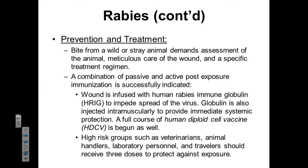A combination of both passive and active exposure immunization is successfully indicated to treat individuals exposed to rabies after being bitten. The wound itself will be infused with immunoglobulin designed to bind to the rabies virus. This globulin will be injected intramuscularly and will provide immediate systemic protection. A follow-up vaccine based on human diploid cells will also begin at the same time. If you're an individual in a high-risk setting — an animal handler, a veterinarian, or somebody in animal husbandry — you should receive three doses of this vaccine preemptively.